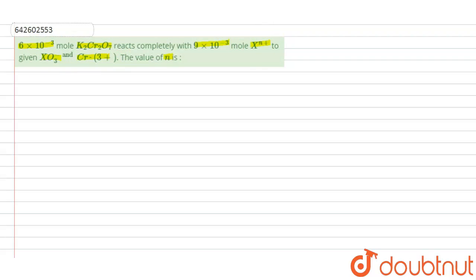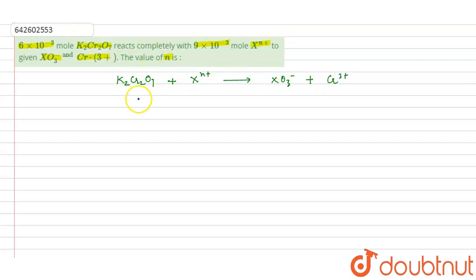Writing the equation first: K₂Cr₂O₇ reacts with Xⁿ⁺ to give XO₃⁻ and Cr³⁺. First, talking about when K₂Cr₂O₇ changes to Cr³⁺ — the oxidation state of chromium here can be calculated as follows.